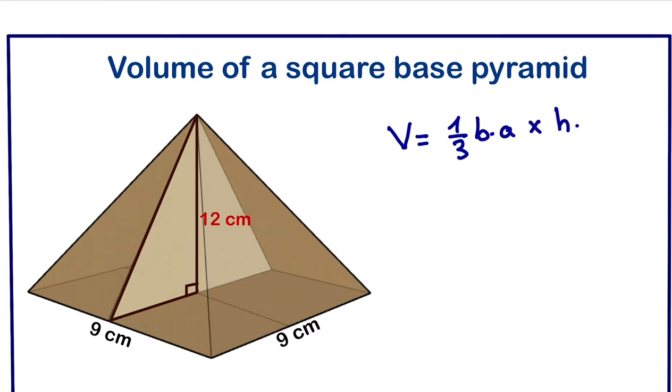Looking at this pyramid, at the base we have a square. We have 9 centimeters, 9 times 9 will give us 81. So this is the base area.